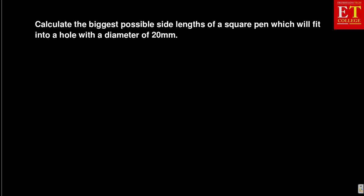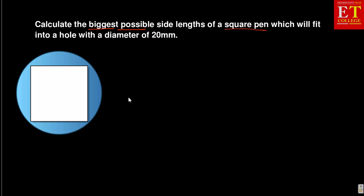Looking at the question again, we are asked to calculate the biggest possible side length of a square peg which will fit in a hole with a diameter of 20 millimeters. Let us start by coming up with a sketch or diagram which can represent this scenario. The blue color in our diagram represents the hole. The diameter of a circle is the line which passes through the center from the circumference to the opposite circumference.